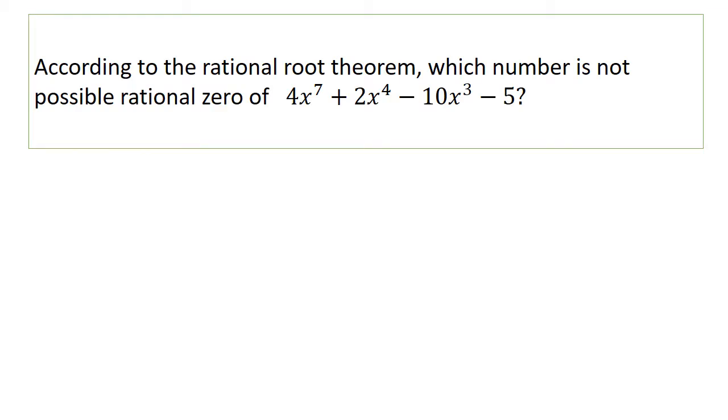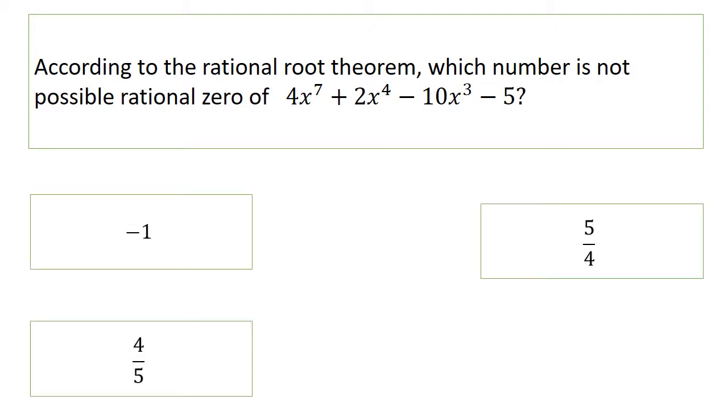Next question: according to the rational root theorem, which number is not possible to be a rational zero of 4x⁷ + 2x⁴ - nx³ - 5? Is it -1, 5/4, 4/5, or 5? Can you guess? Yes, it is 5/4. 5/4 cannot be the root or cannot be the rational zero for this question.